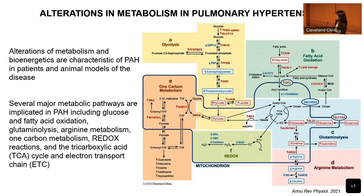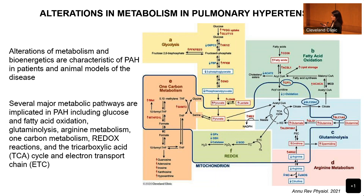This is a very busy slide showing all the different alterations in metabolic pathways in pulmonary hypertension, from a recent review by our group by Dr. Weylin Zhu. The blue line represents the mitochondria — everything inside is the mitochondrial pathways, and the rest is in the cytosol. Different pathways are involved in PH, including glycolysis, fatty acid oxidation, glutaminolysis, arginine metabolism, the TCA cycle, the electron transport chain, redox, and one-carbon metabolism. I'll try to go through each of these pathways.